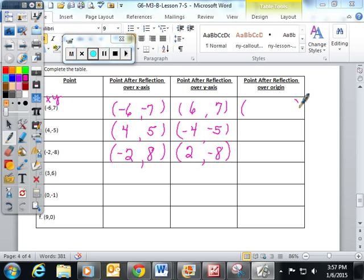And last but certainly not least, hopefully the easiest of all, you take all of these points and you flip them over the origin in which time you have to take all of the coordinates and flip them to their opposites. And this was a brief summary of what we learned today in lesson seven.